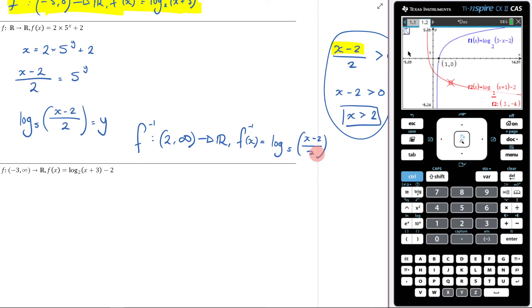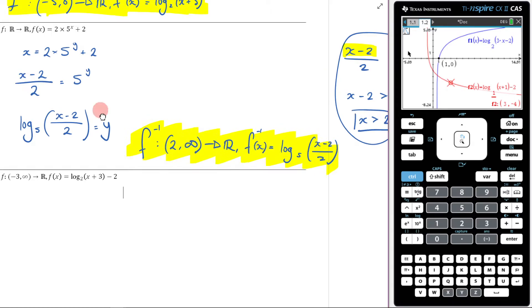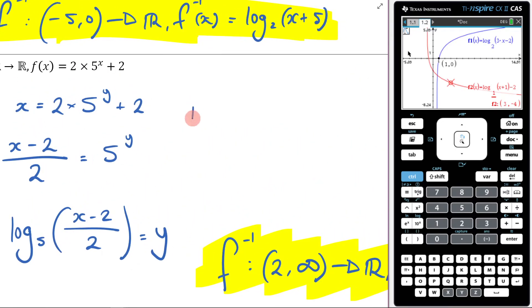Now, the other thing that we have to do here is state the range of this thing. And this is where it's probably important that we just kind of think about what the domain and range of the original is. So let's do that. Let's come over here and let's think about what's the domain of the original and what's the range of the original. Okay, so what is the domain of the original here?